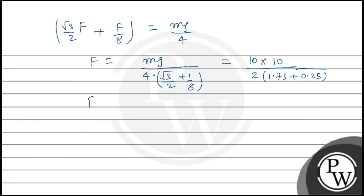So F equals 100/2 times 1.98. Solving this, the value of F comes out to be 25.25 N.